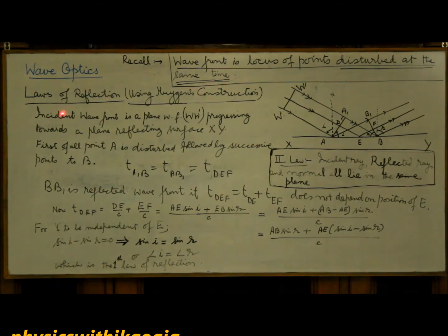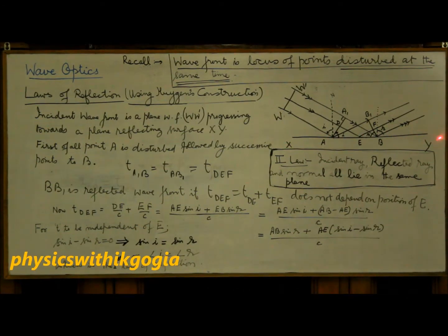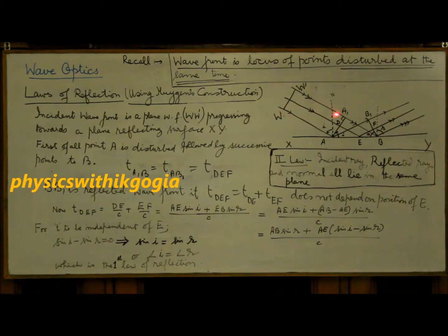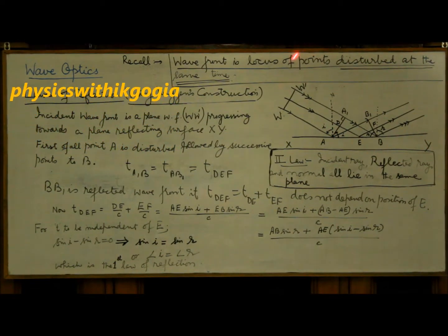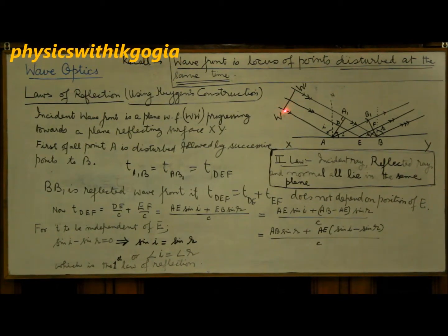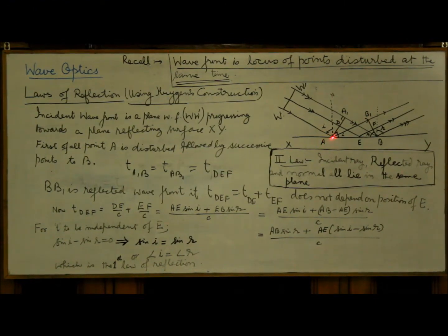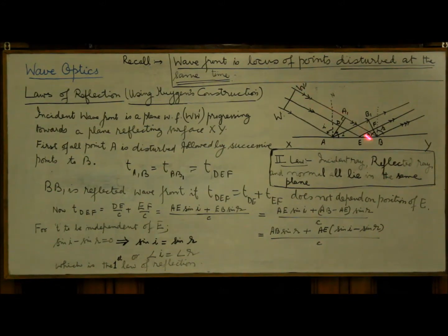To verify the laws of reflection using the theory, let's consider a plane reflecting surface XY and a plane wavefront WW' progressing towards this surface XY with speed C. As the wavefront progresses, first of all the energy reaches point A, which is disturbed, and gradually the points progress to E and then to B. All these points between A and B are successively disturbed as we move from A to B as the wavefront progresses.